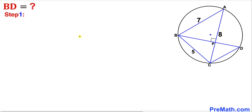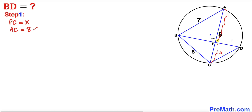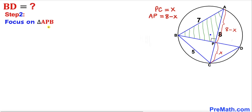Let's get started. Here's our very first step. Let me go ahead and call this length PC as X. We know this whole length AC is 8 units, so therefore this length AP is going to be 8 minus X.